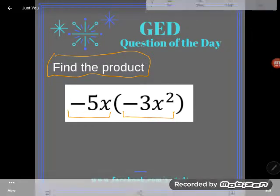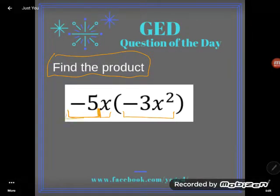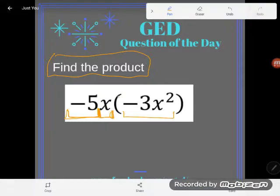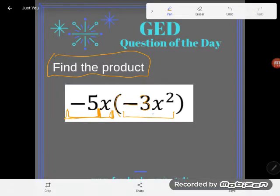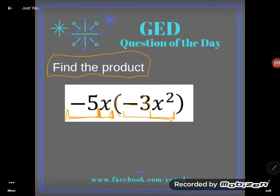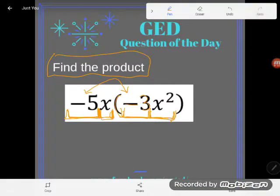See how the -5 is shoved up against the x? That's like -5 times x times -3, which is shoved up against x². So that's times x². Another way to think of this is as four numbers multiplying: a -5, an x, a -3, and an x². Thinking of it this way helps me remember that I can multiply in any order I want, and I'll start with the coefficients, the numbers out front.